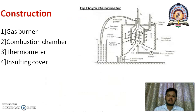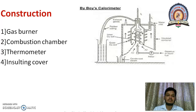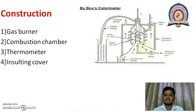Let's start the construction of Boyce gas calorimeter. Boyce gas calorimeter consists of four different parts: the first one is the gas burner, the second one is the combustion chamber, the third one is the thermometer, and the fourth one is the insulating cover. Now let's see the gas burner. At the bottom of the assembly, there is a gas burner in which a known quantity of gas is continuously passed at a known and constant rate — approximately three to four liters per minute.